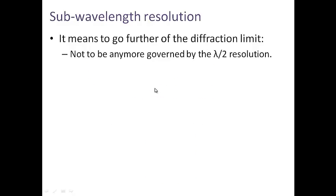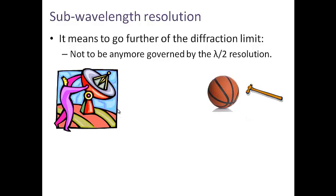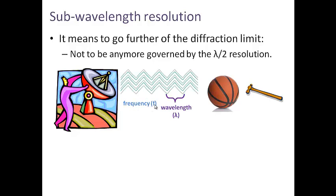Sub-wavelength resolution means that we will go beyond the diffraction limit, no longer governed by lambda over 2 resolution. For instance, if we have two different objects and an antenna which can transmit electromagnetic waves, these waves will have a certain frequency and associated wavelength. If these two objects have a distance higher than lambda over 2, traditionally we will be able to distinguish both of them.